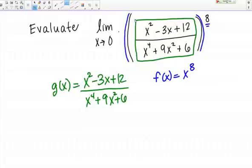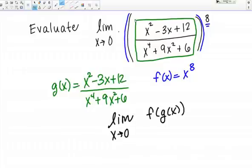Then, what I'm really asking for the limit up here at the top is the limit as X goes to 0 of F of G of X, the composition of those two functions.